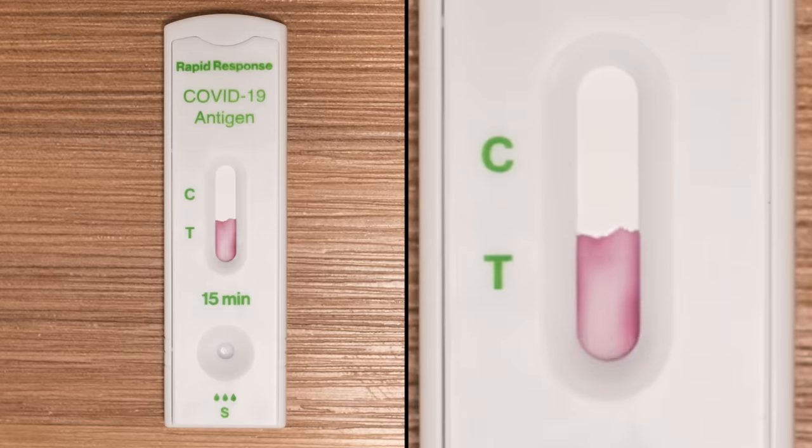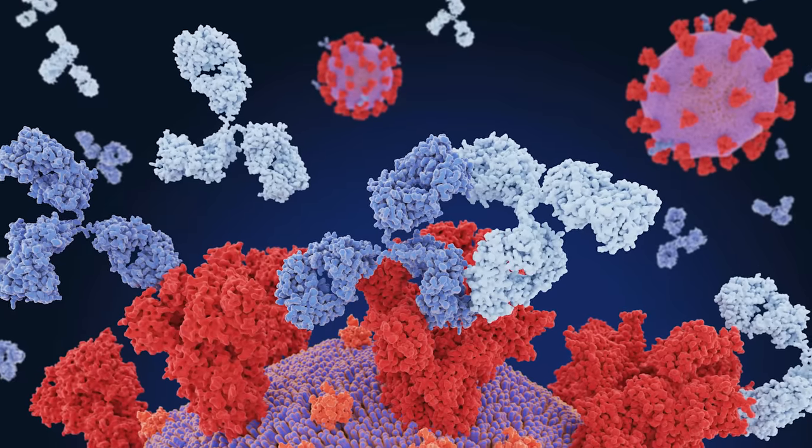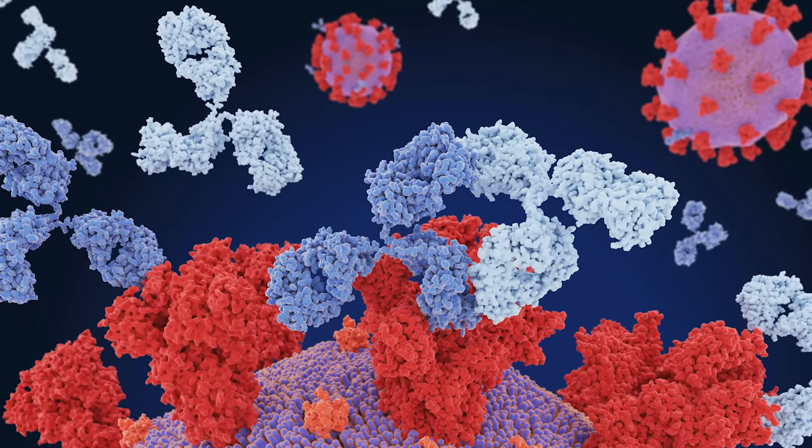Those antibodies are immune responses to a specific antigen. An antigen is the part of the virus that is easily distinguishable. So technically pollen could be an antigen. Any foreign body that comes into your body could be an antigen. But a lot of times we talk about it in the context of a virus.